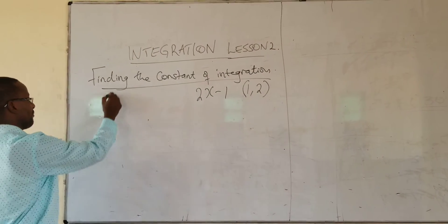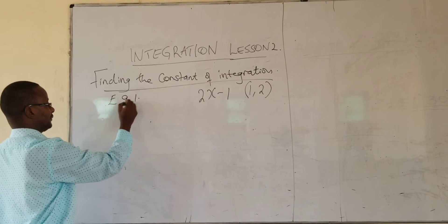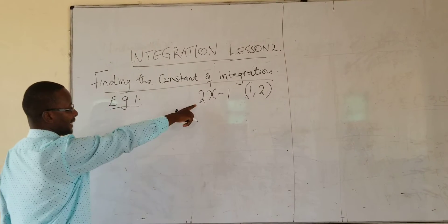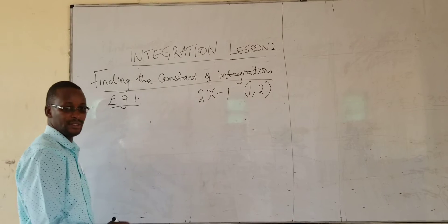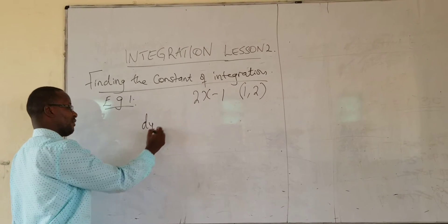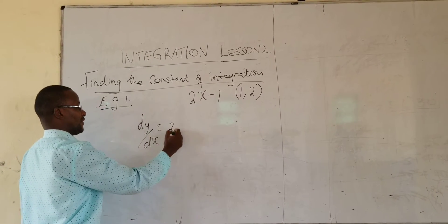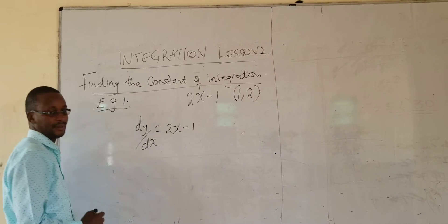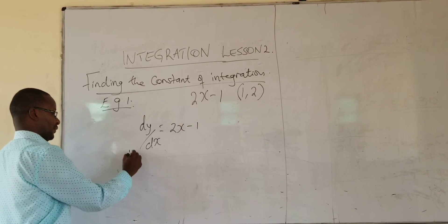So in this example, the gradient is given by this equation, meaning you have been given dy over dx, which is 2x minus 1.